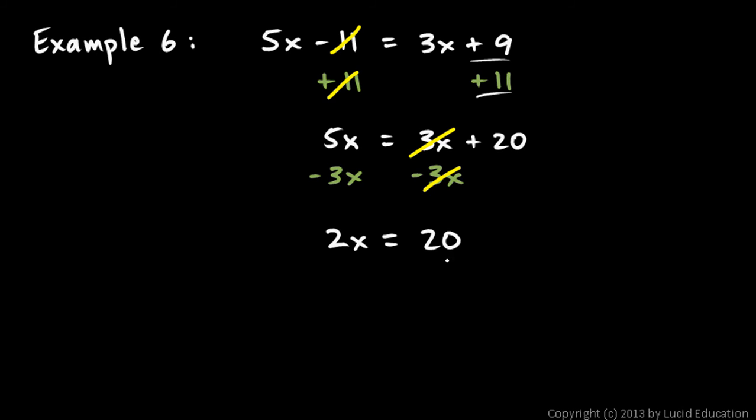And now you can see that x equals 10. And you can do this last step in your head. If it's simple like this, you can just see that 2 times what is 20? 2 times 10 is 20. You should know that, because you know your multiplication tables. But you could also do the algebra. Divide both sides by 2. And the 2s cancel, and you're left with x all by itself. And 20 divided by 2 is 10.